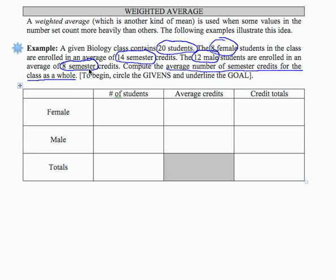It would not be correct to just take 14 and 8 and average them, because it's a weighted average. There are 8 women in the class and 12 men, so it's not an equal number of men and women — we can't just add them and divide by 2.